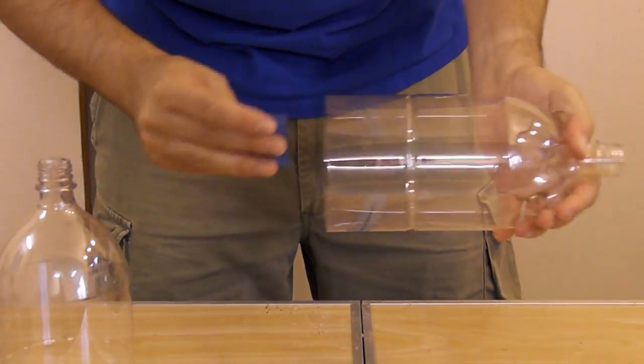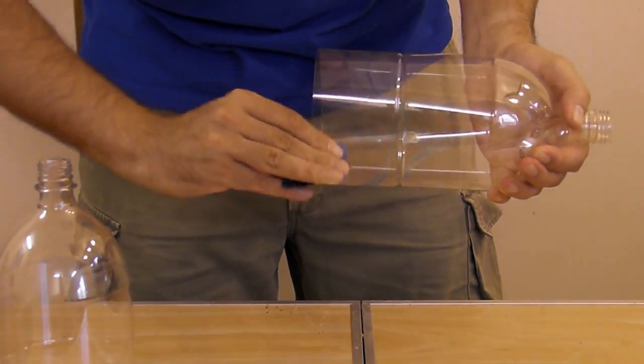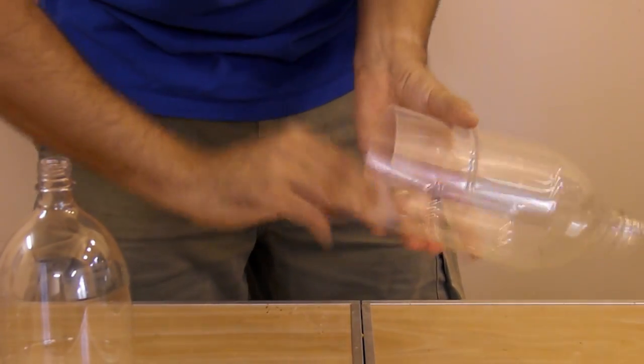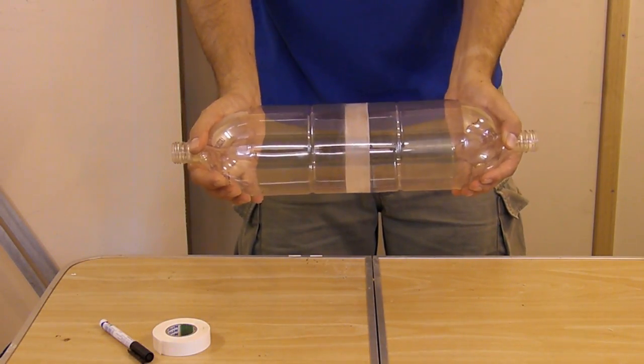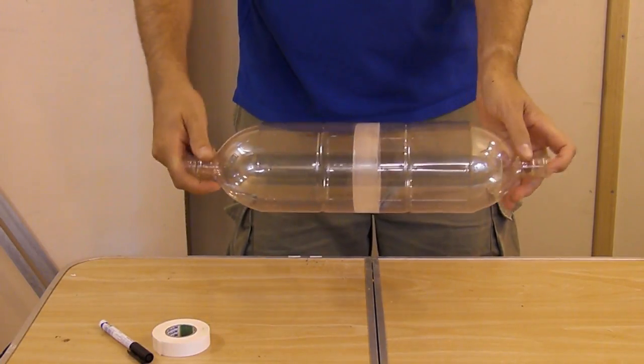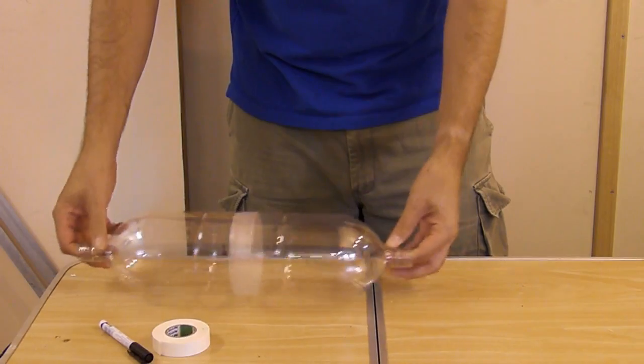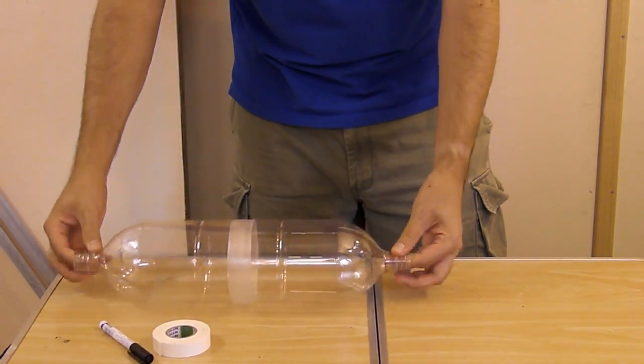Take the two bottles, put them together. Now make sure they're well aligned. What I do is I just give it a spin and if there's a wobble, I just tap it on the table to straighten out the joint. That looks pretty good.